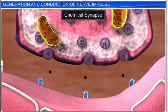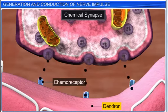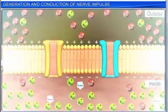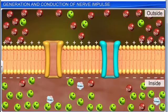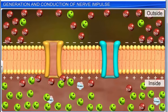The neurotransmitters thus released bind to their specific chemoreceptors present on the post-synaptic membrane of the dendron. This binding opens sodium ion channels that allow the entry of ions to generate a new potential in the post-synaptic neuron. This may lead to the development of an excitatory or an inhibitory new potential.